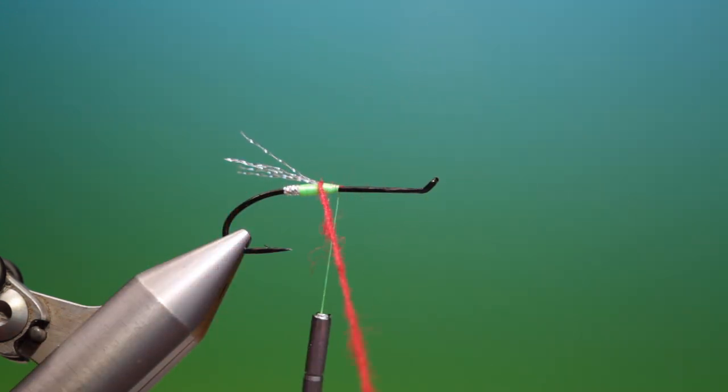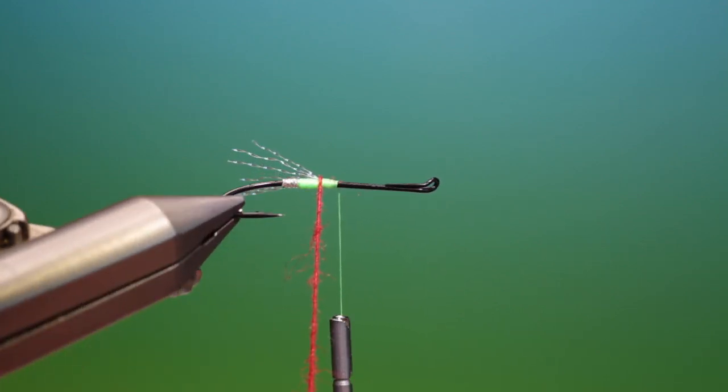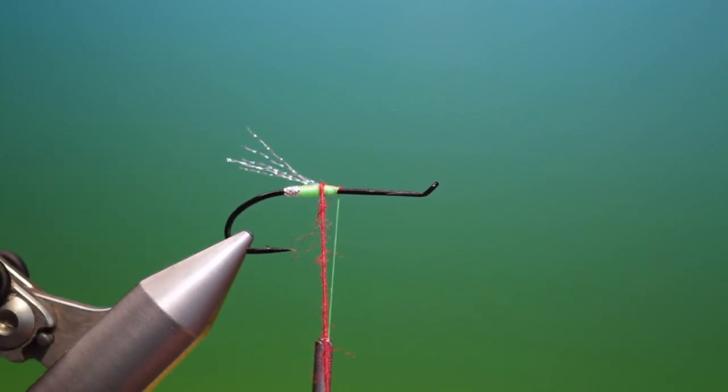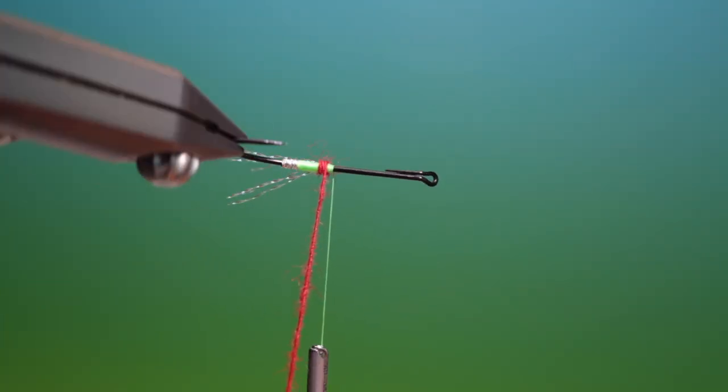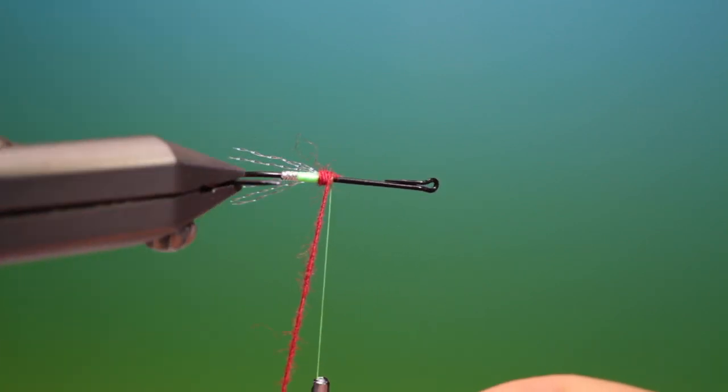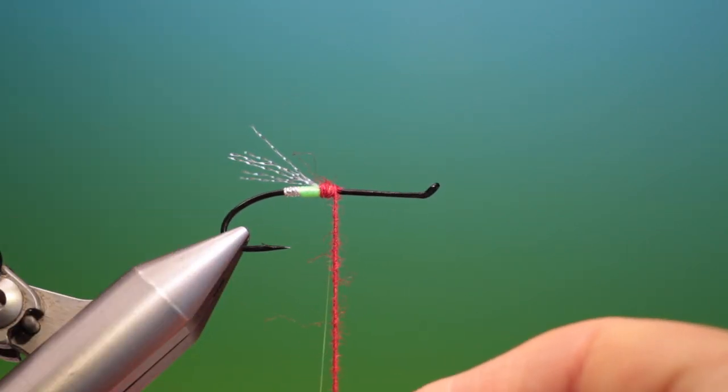Then before you start wrapping your red wool what we want to do is twist it up so it gets that lovely buggy tight rope effect and then we'll just wind this on like so.